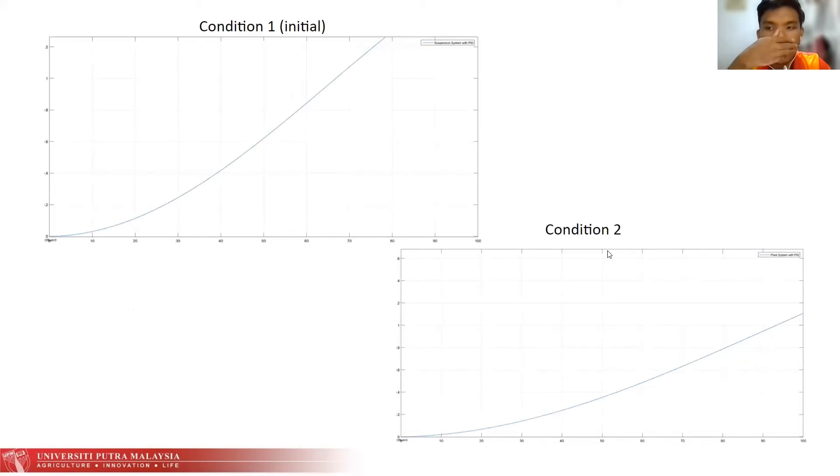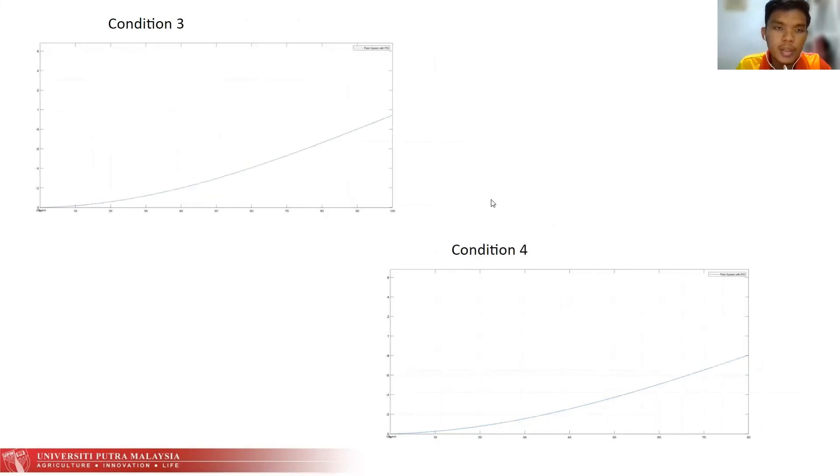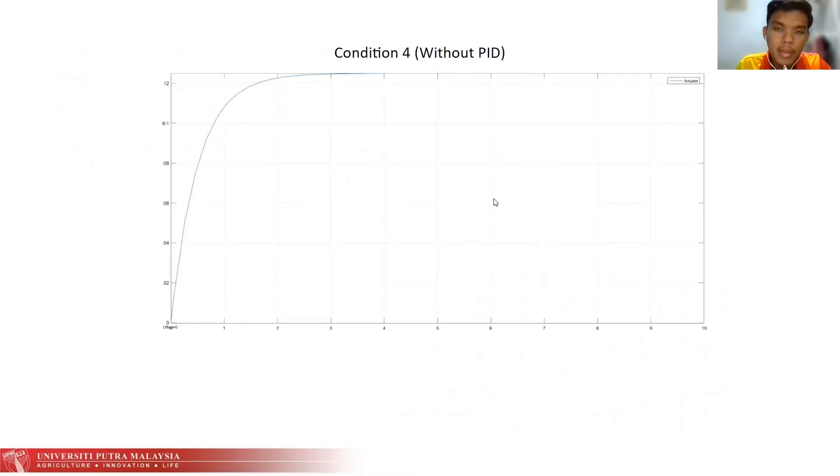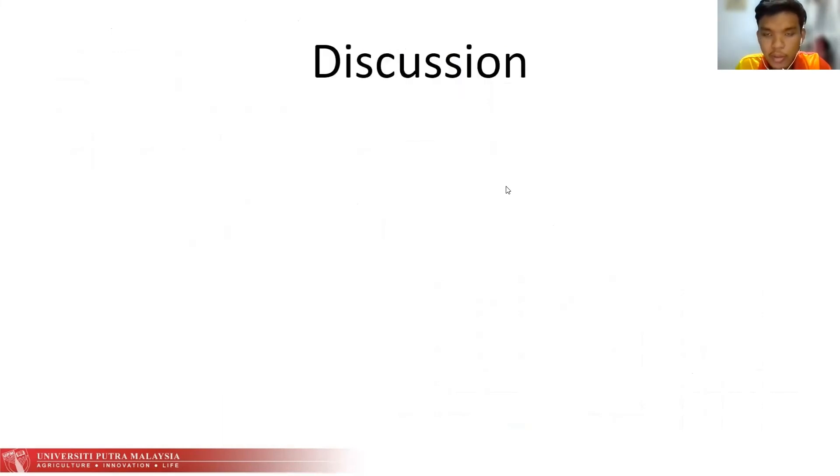Let's proceed with the result. These are the results that we obtain from the scope or from the output. The first one is the initial condition, which is condition number 1. This is condition number 2. These are condition number 3 and condition number 4. The last one is the condition without using the PID control in the system.